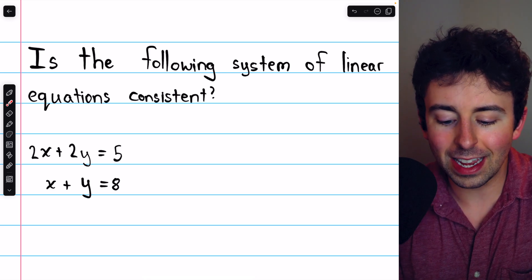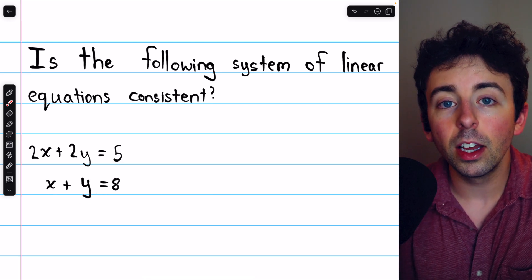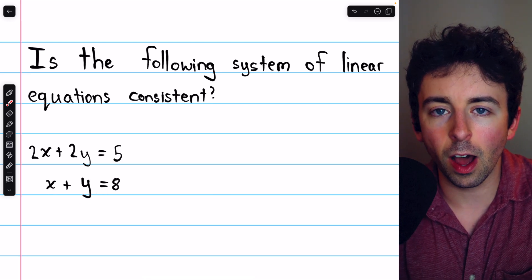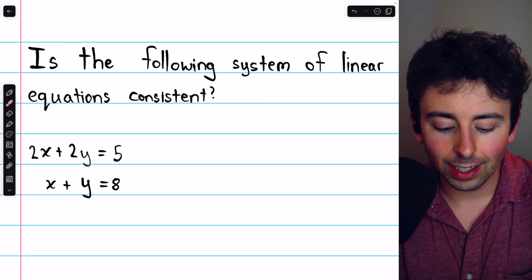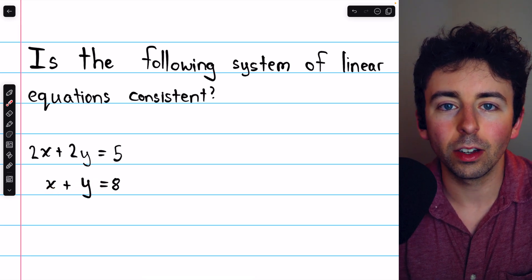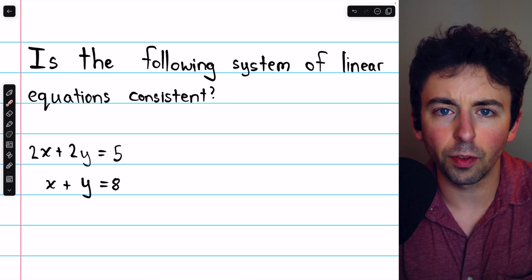As a quick first example, is this system of linear equations consistent? You may quickly be able to tell that it is not, because if in fact x plus y is equal to 8, then 2x plus 2y, which is twice as much, must equal 16, not 5.